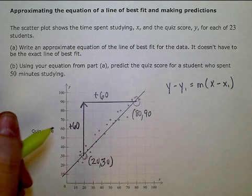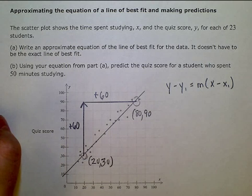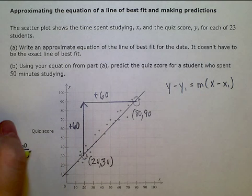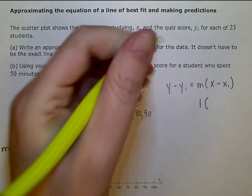So my slope is 60 over 60, which equals 1, positive 1. That's going to be a positive 1 right there.